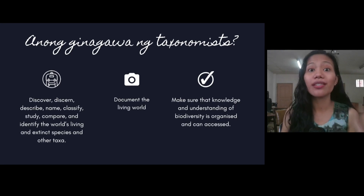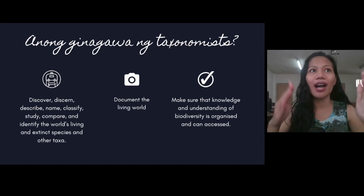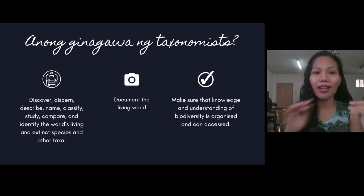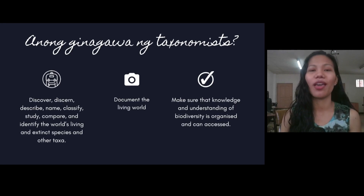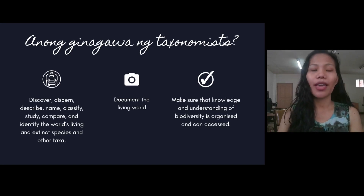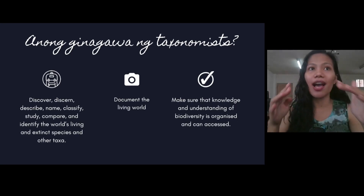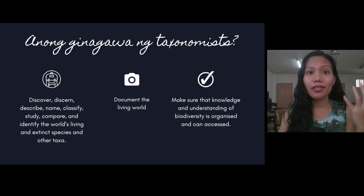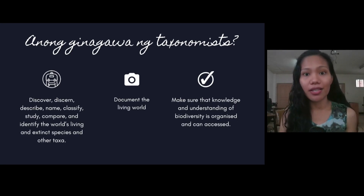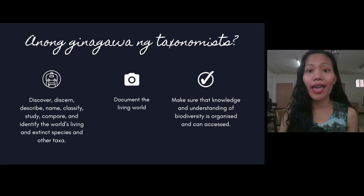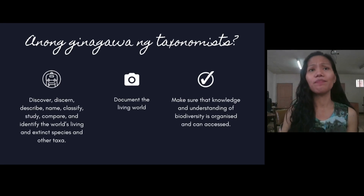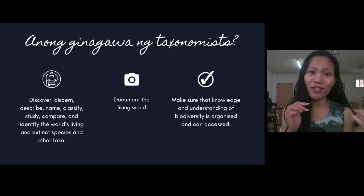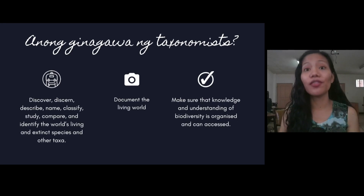Take note of the word 'distinguishing' — these are the features that set an organism apart from the rest. Later, you will read about Linnaeus, who focused on reproductive organs in plants as main sources of distinguishing characteristics in order to easily classify and identify them. His reasons for this were largely religious, but it eventually proved useful, as history tells us.